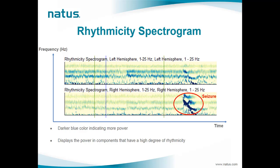The rhythmicity spectrogram differs from the color density spectral array by only displaying the power in components that have a high degree of rhythmicity, instead of displaying all power. Seizures appear as areas that are darker in color. Since seizures often consist of a gradual increase and evolution in frequency, amplitude, and rhythmicity, the progression of a seizure can often be appreciated on the rhythmicity spectrogram more so than other trends. Seizures will show a greater incline when frequency is increasing or a decline when frequency is decreasing.